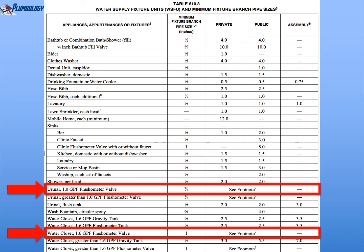We see urinal, one gallon per flush, flushometer valve. Comparing those two to the others — like water closets, gravity tank — notice that gravity tank water closets are given a set fixture unit value. The table says all gravity tank water closets are 2.5 fixture units. The flushometer tank, or pressure-assisted tanks, are 2.5 for public and private use, 3.5 for assembly use. But for the two highlighted entries — the urinal and water closet flushometer valves — they don't give a value. They say see footnote number 7. So on the next slide we'll look at footnote number 7.